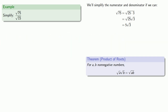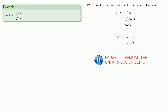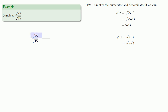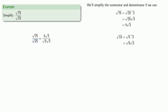We'll try the same thing with square root of 15. 15 is 5 times 3, and the square root of a product is the product of the square roots. Unfortunately, neither 5 nor 3 is a perfect square, so we have to leave them in this product of square roots form. So instead of square root of 75 I could write 5 square root of 3, and instead of square root of 15 I could write square root of 5 times square root of 3.